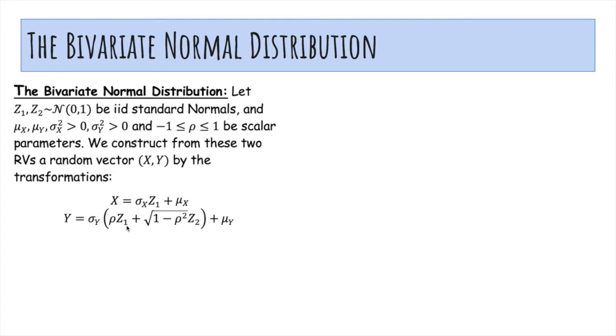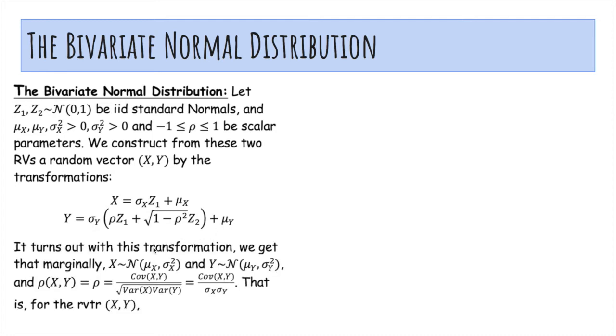And Y is a mixture of z1 and z2, you can see with the correlation here, and has scaled by sigma y and also shifted by mu y. So what we get is that marginally, X and Y are both Gaussian with their respective mean and variances that we want it to have, and the covariance is actually rho by definition, by this construction.